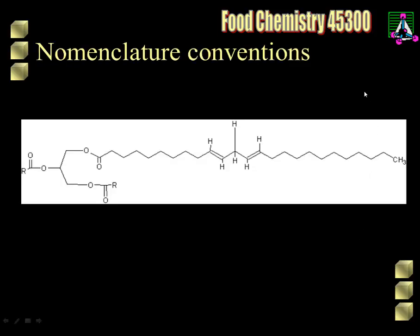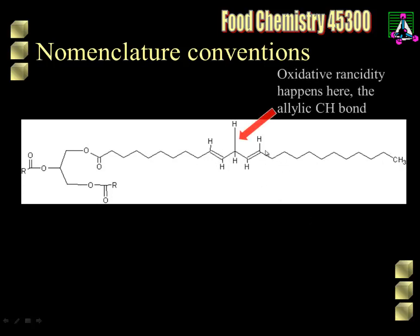Reminding ourselves of our nomenclature conventions, here is a picture of at least part of a triglyceride. Here's the long fatty acid chain, here's the pentadiene unit where oxidation is going to happen, and it's going to happen right here at this carbon-hydrogen bond — between the two carbon-hydrogen double bonds. This is called an allylic CH bond.